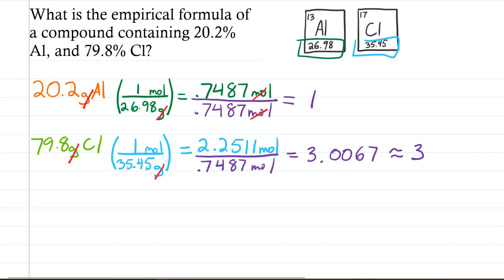oh, and remember, we've got to cancel out moles. So our final answer is going to be Al1, which we're not going to write, Cl3. Okay, 3 coming from there. Final answer, AlCl3.